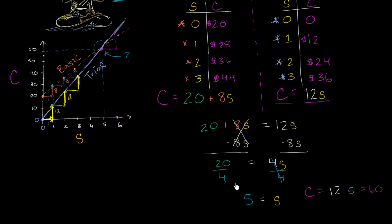And then all of a sudden he said, well, that's all cute, what you did, Sal. I understand what you said — there's some number of sessions where 12s is equal to 20 plus 8s, where we get the same exact cost. So you said 20 plus 8s is equal to 12s, or another way you could say it is the cost that 20 plus 8s gets is going to be the same as the cost that 12s gets. So we just equate them, then you solve for s, and then you solve for the cost.